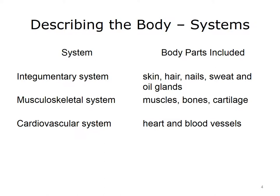The body is divided into various systems. The integumentary system includes the skin, hair, nails, sweat, and oil glands. It receives sensory information for pain, touch, and temperature, protects internal organs from infection and trauma, and regulates body temperature by sweating. The musculoskeletal system includes muscles, bones, and cartilage, and supports the body and produces body movement. The cardiovascular system includes the heart and blood vessels, and pumps blood throughout the body to transport nutrients, oxygen, and wastes.